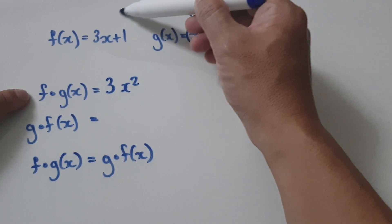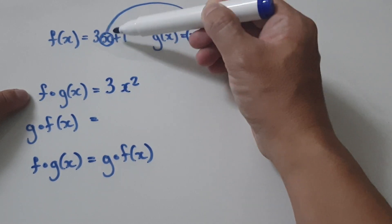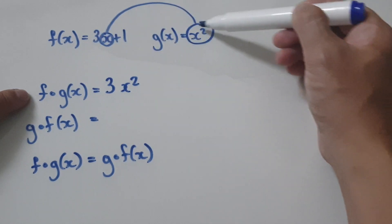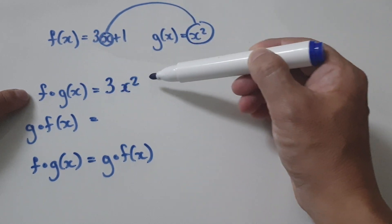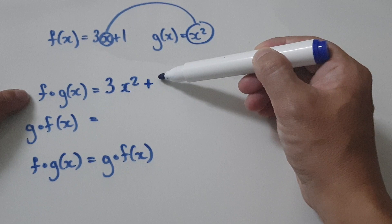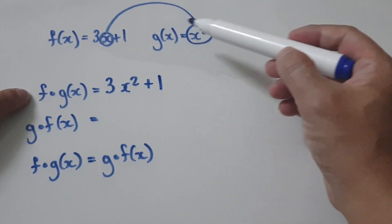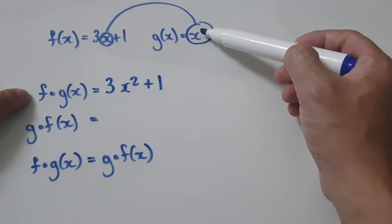inside here, it will look like three this thing here, three this thing here, and then you've got your plus one. So that's what it means. When you get g(x) and bury it inside f(x), it will then give you this.